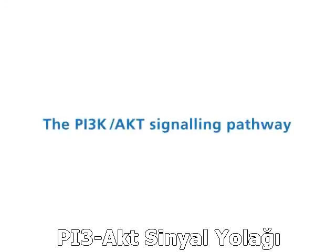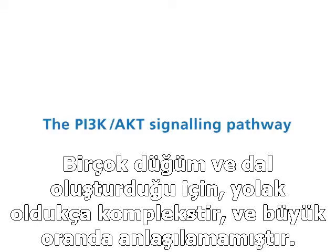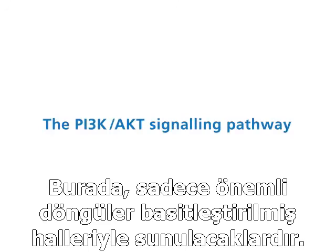The PI3K AKT Signaling Pathway consists of many activators, inhibitors, effectors, and second messengers. Because of its many loops and branches, the pathway is very complex and far from understood. Here, only the most important circuits will be presented in a simplified way.